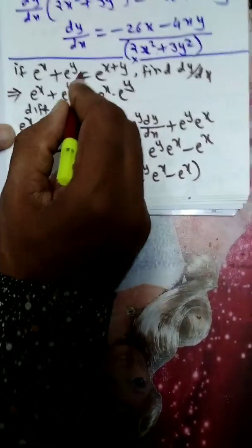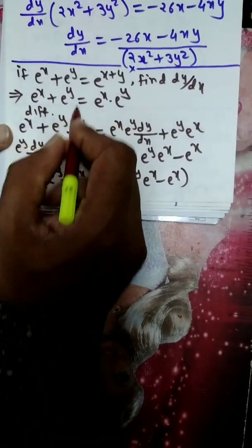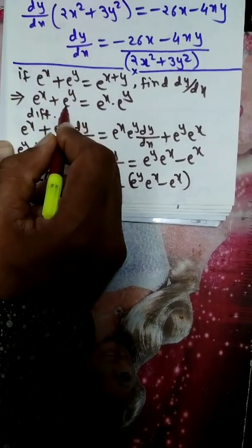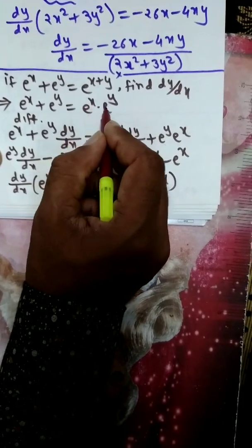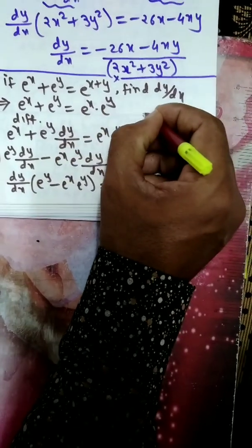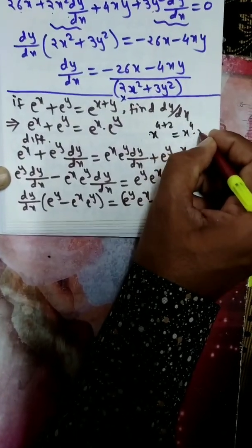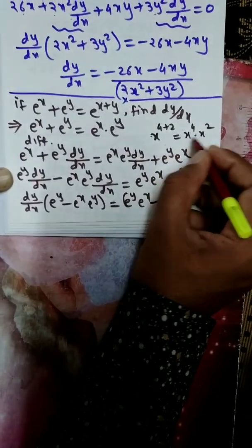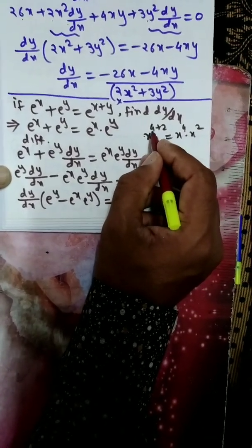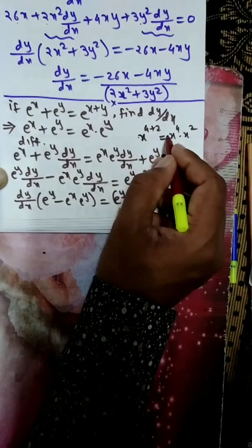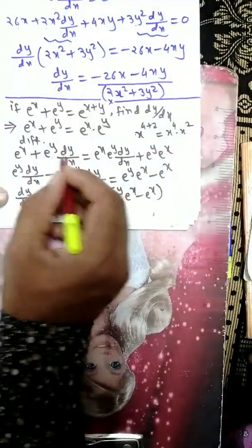Next example: if e^x + e^y = e^(x+y), find dy/dx. We can rewrite e^(x+y) as e^x · e^y, since when the base is the same, powers add — so we can separate the power. Now differentiating throughout with respect to x: derivative of e^x is e^x, and derivative of e^y is e^y · dy/dx.